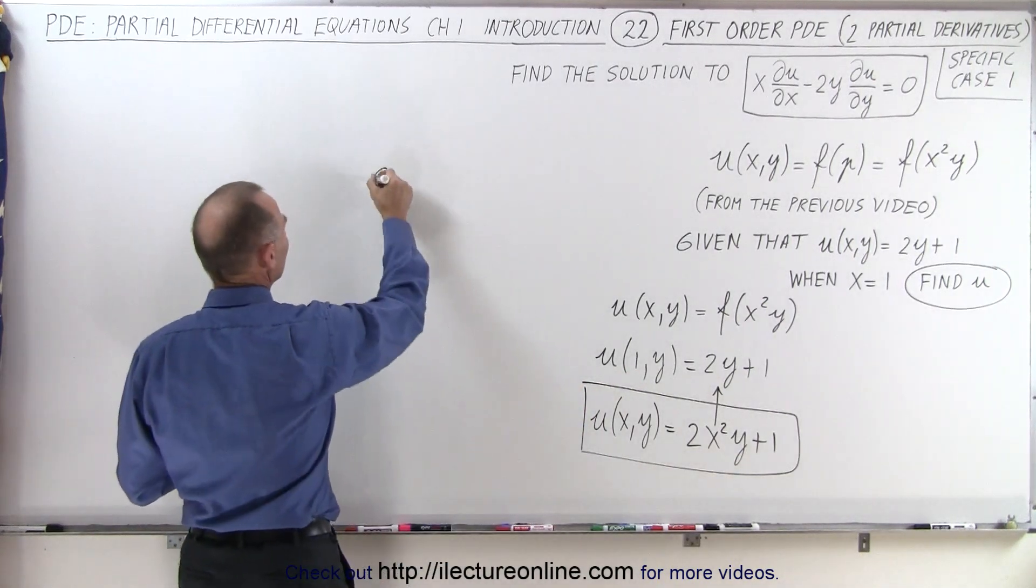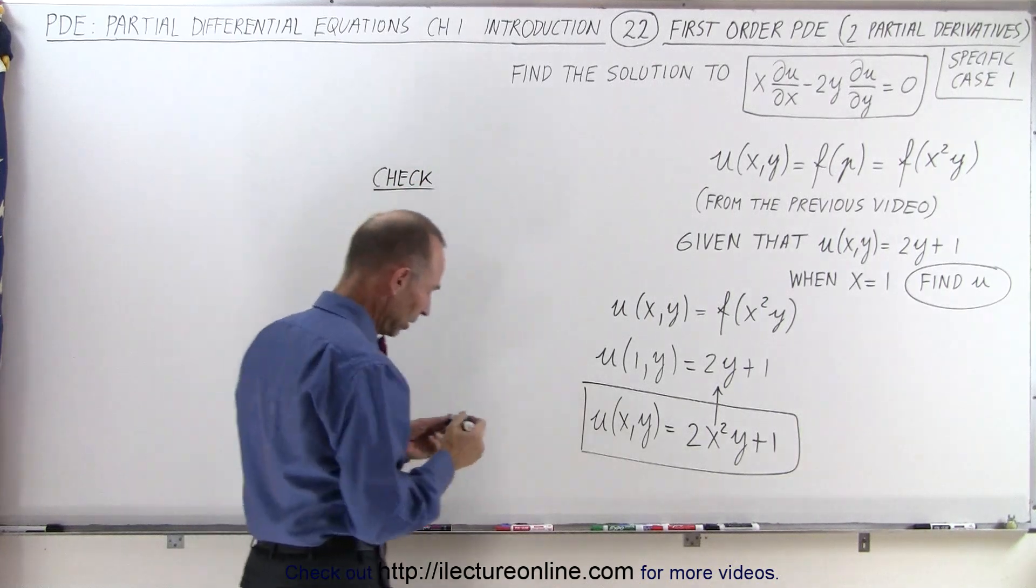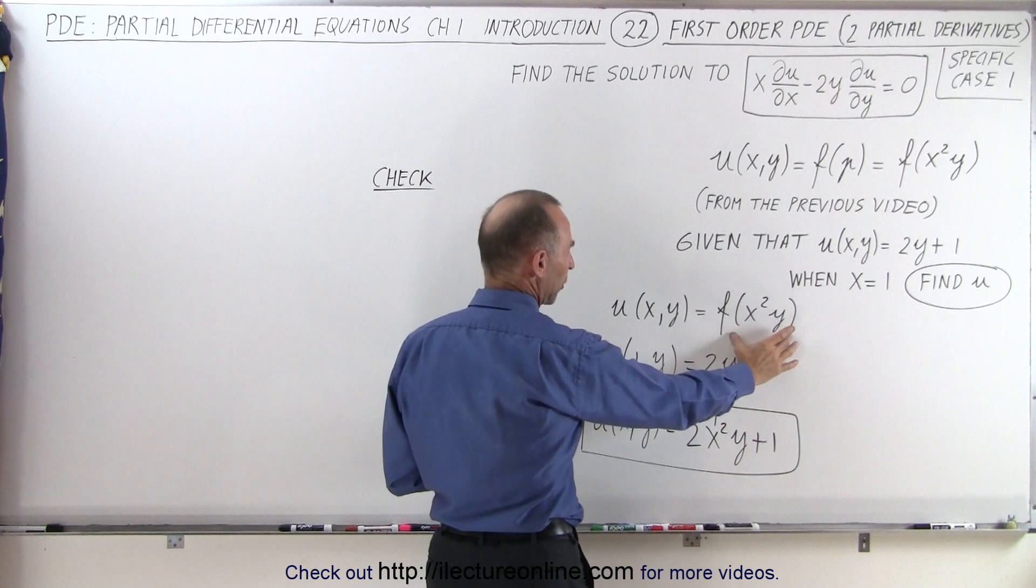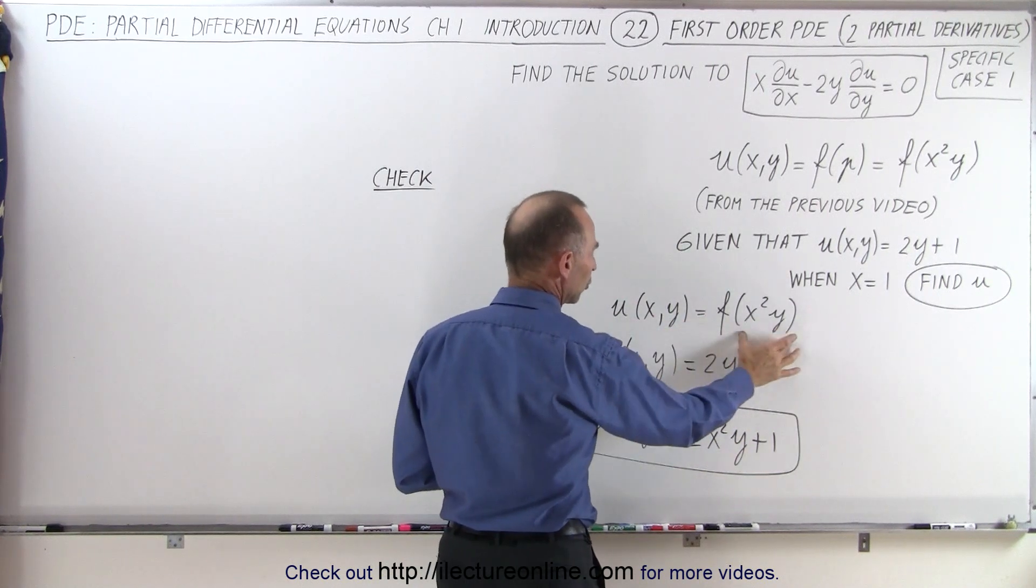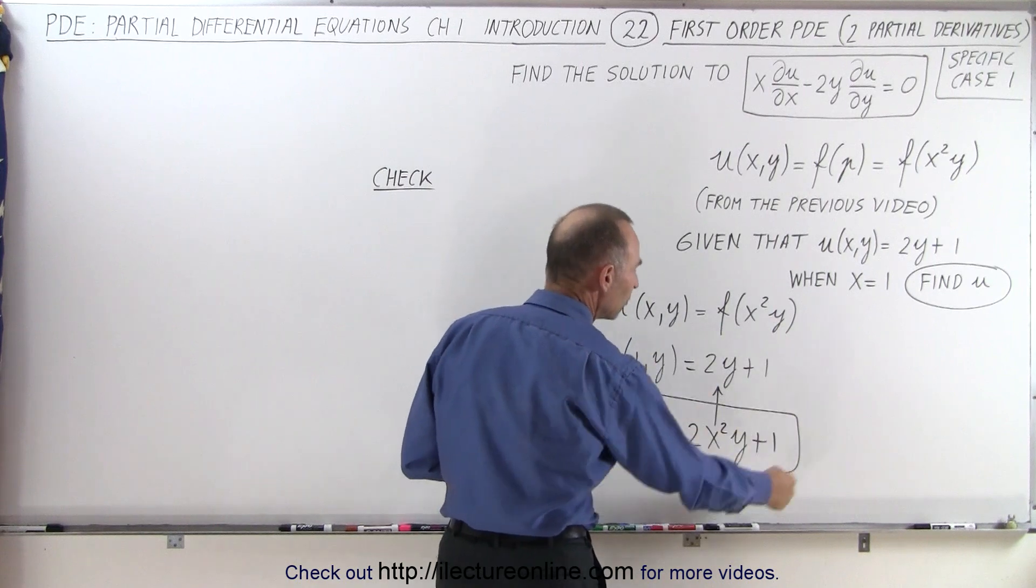So we can see here, we can verify. Let's do a check. First of all, we know that the function includes x squared y which is a requirement. That was the general solution that u had to be some function of x squared y, which this meets that requirement.